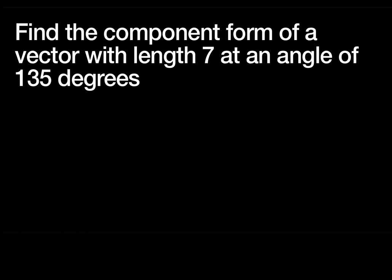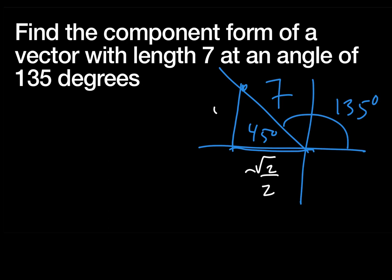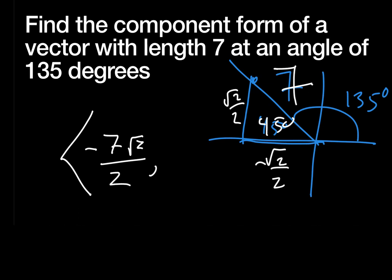Find the component form of the vector with length 7 and angle 135°. That means 45° from the vertical, and from the unit circle at 45° we have (√2/2, √2/2). Being 7 units out, the vector is (-7√2/2, 7√2/2) in component form.